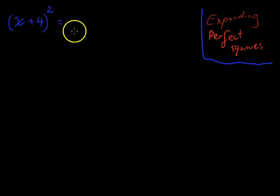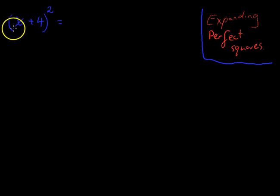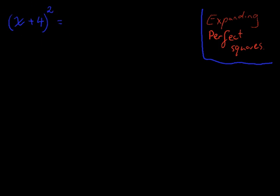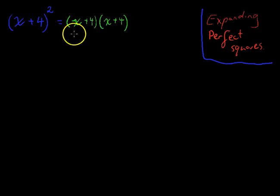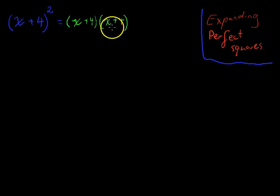The way to do this is to think of it as a binomial expansion, as a set of brackets, because it's this bracket multiplied by itself. So it's x plus 4 times x plus 4. These are the same thing — x plus 4 squared just means x plus 4 multiplied by itself, which is x plus 4 times x plus 4. Now you know how to expand this.